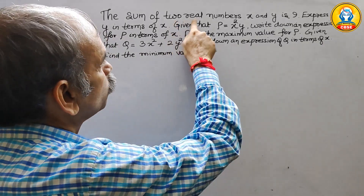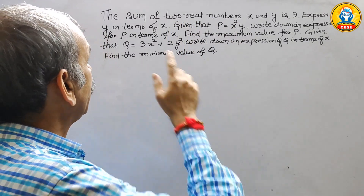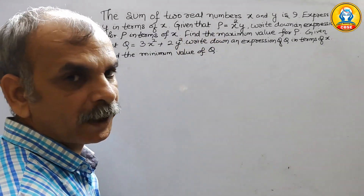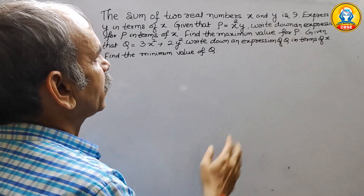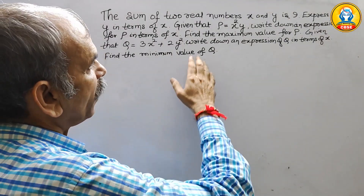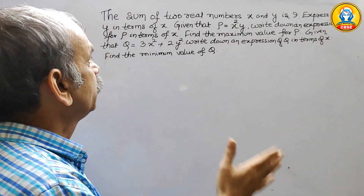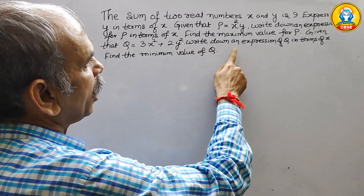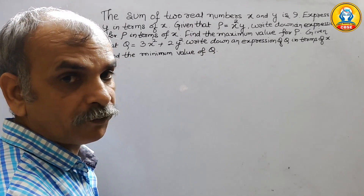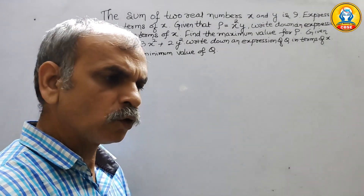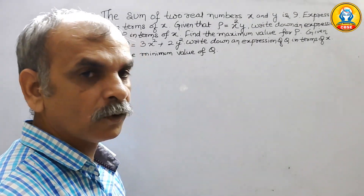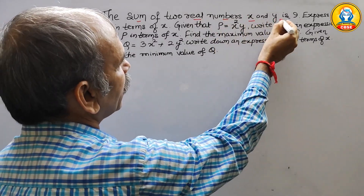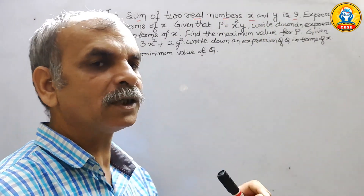The question states: the sum of two real numbers x and y is 9. Express y in terms of x. Given that the sum of x and y is 9, that means x plus y is equal to 9.